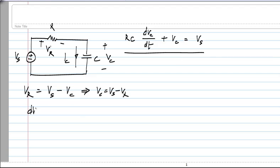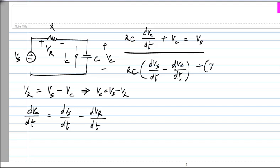What we will get is that the derivative of Vc equals the derivative of Vs minus the derivative of Vr. Substituting these two relationships into that one, we get the following: Rc times d Vr by dt plus Vs minus Vr equals Vs. If you rearrange the terms, you will see that it is Rc times d Vr by dt plus Vr equals Rc times the time derivative of Vs.